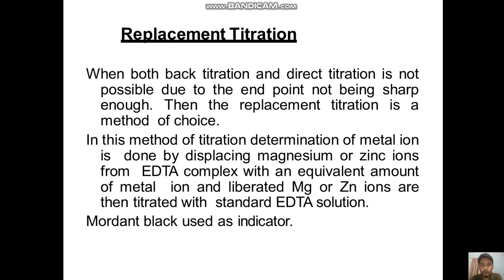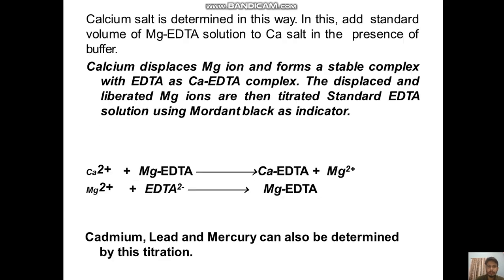The third method is replacement titration, used when both back titration and direct titration are not possible due to the endpoint not being sharp enough. In this method, the determination of the metal is done by displacing magnesium or zinc ions from their EDTA complex with an equivalent amount of the metal ion. The liberated magnesium or zinc ions are then titrated with standard EDTA solution, using Mordant Black as an indicator.